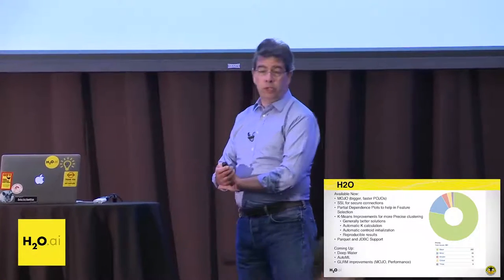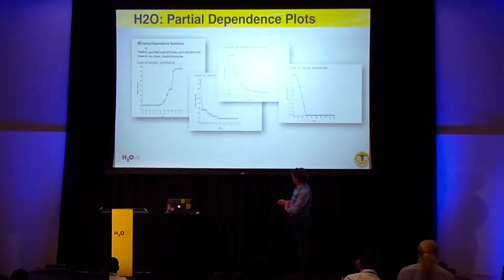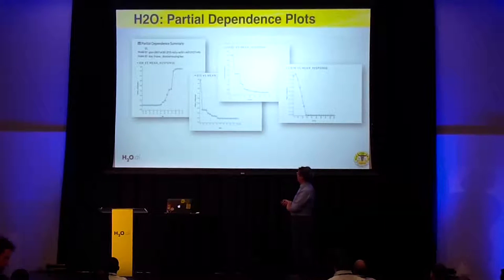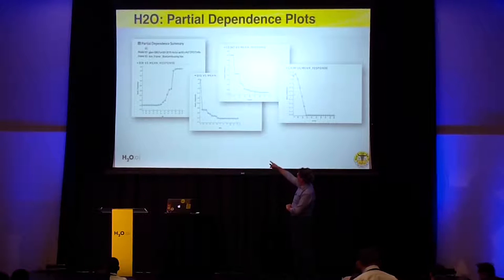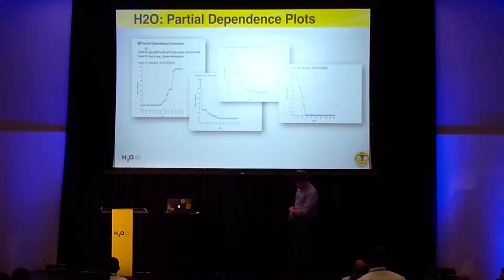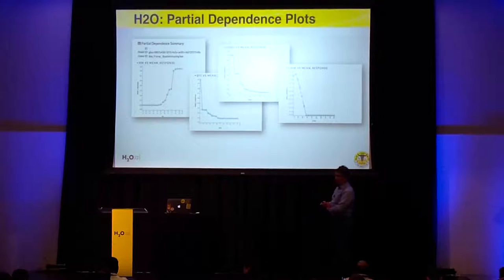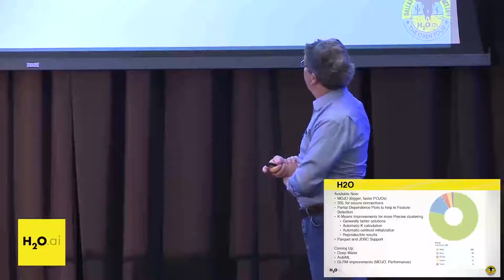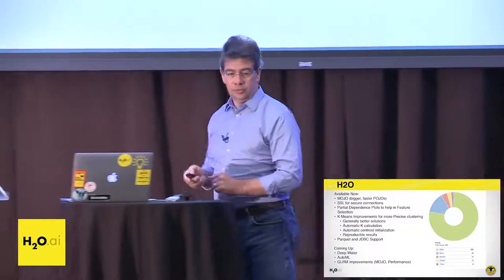Another thing we've introduced are partial dependence plots, and this helps you figure out which of your features are providing the best correlation. This is available in Flow. Using the housing dataset, we've trained a model, and you can see the mean response as it relates to RM, to the DIS variable, to LSTAT, and to crime. You can see the crime rate is a real solid indicator — housing value is fairly high, and then as the crime rate climbs up to a fairly small number, it goes to zero immediately. This gives you a visual indicator of how your features relate to the model performance.